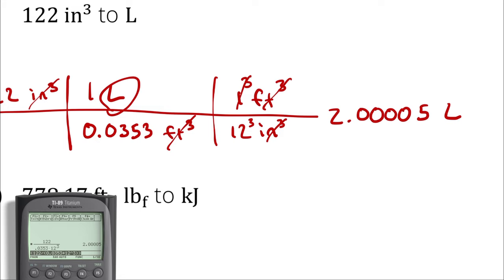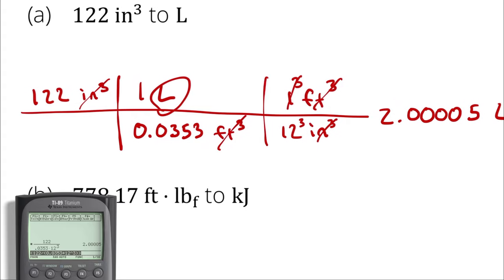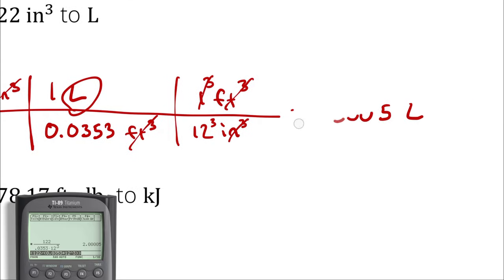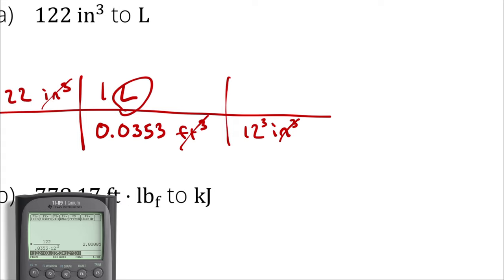Let's check it with our oracle. Convert 122 cubic inches to liters. 122 cubic inches is equivalent to about 2 liters. Just for fun, let's consider the alternative path — what if we had represented a liter in cubic meters instead?